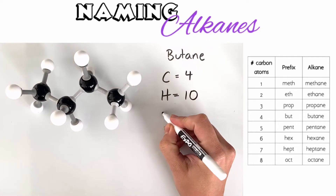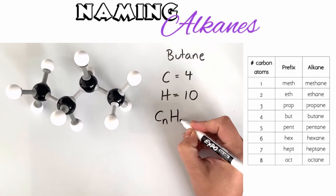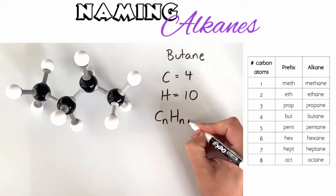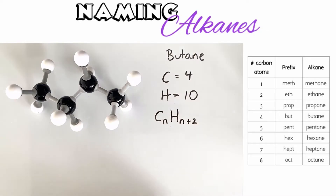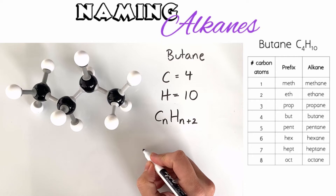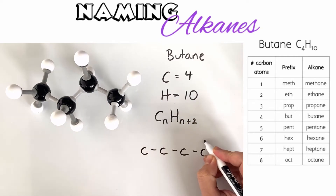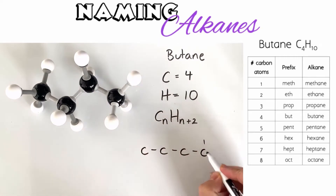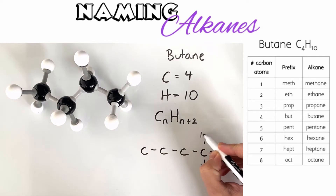What this formula refers to is the ratio between the number of carbon atoms and the number of hydrogen atoms in a molecule. This is how we would draw the structural formula. The structural formula shows every single bond between all atoms in the molecule.